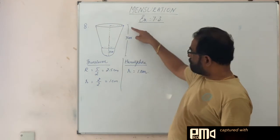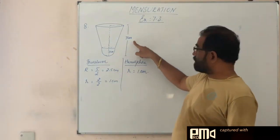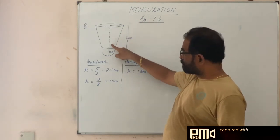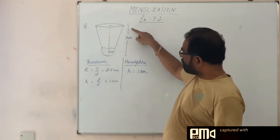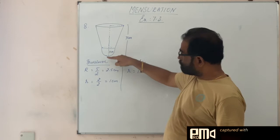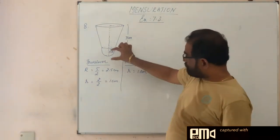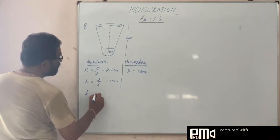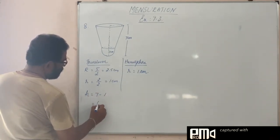For the hemisphere also the radius is 1 cm. Total height of the shuttle clock is 7 cm. So what is the height of the frustum? From the total height, we subtract the radius of this hemisphere. So here, height is equal to 7 minus 1 equals 6 cm.